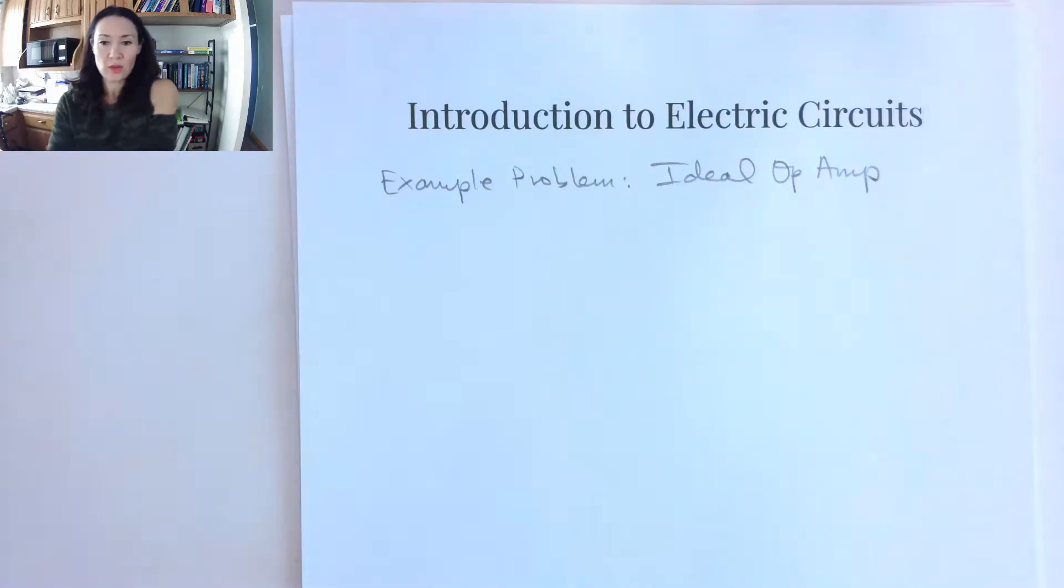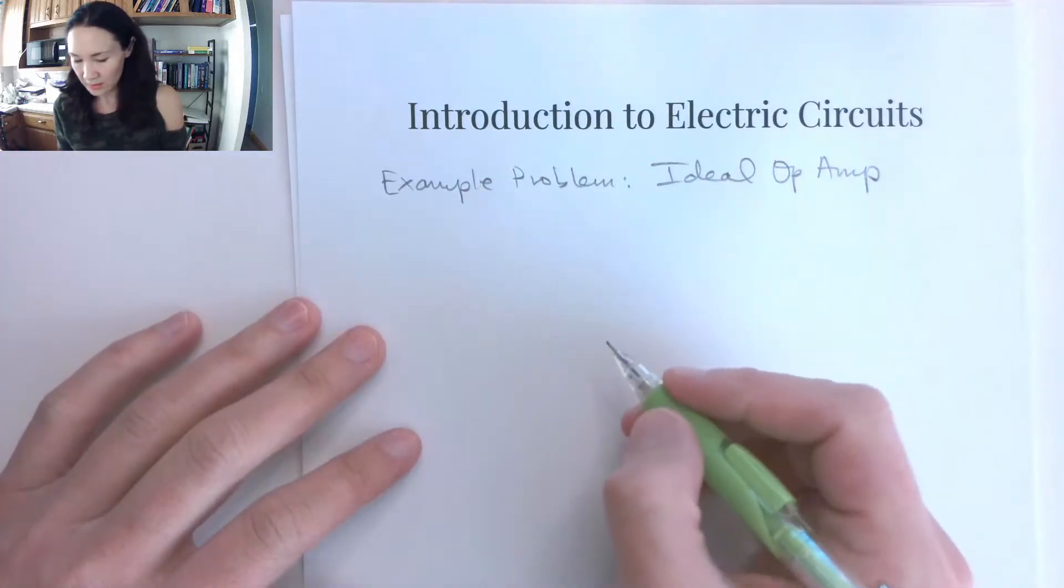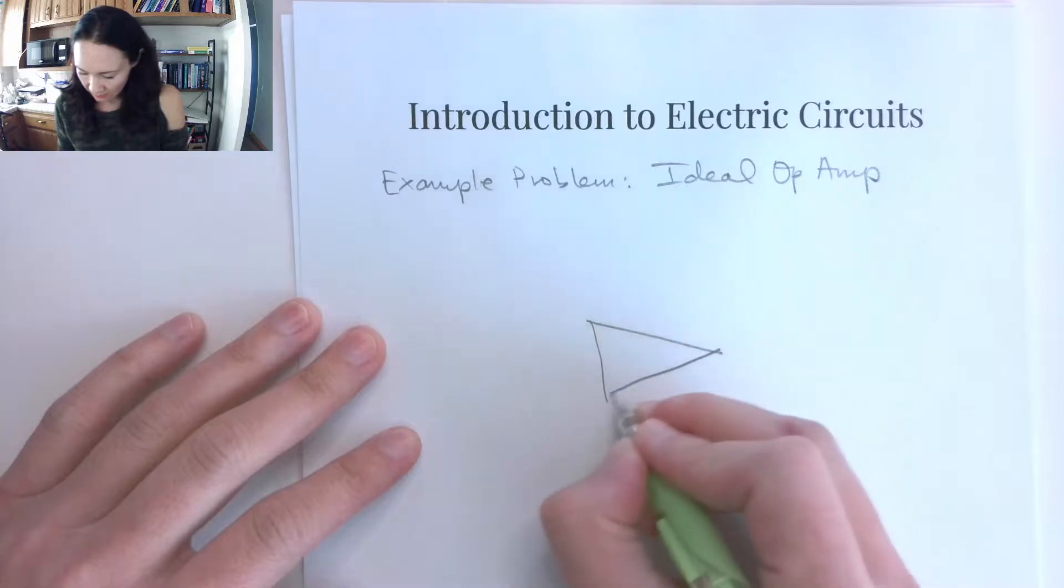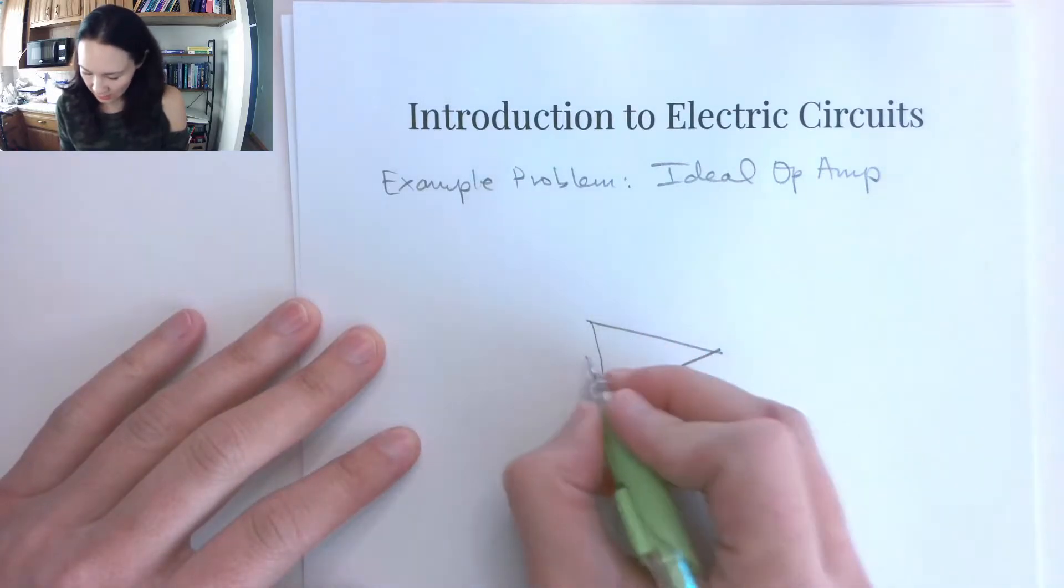Let's use the new ideal op-amp approximations that we learned to solve a circuit that contains an op-amp. Suppose we have an op-amp in this orientation.